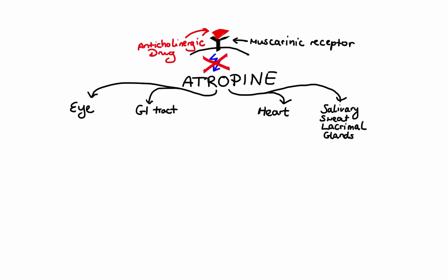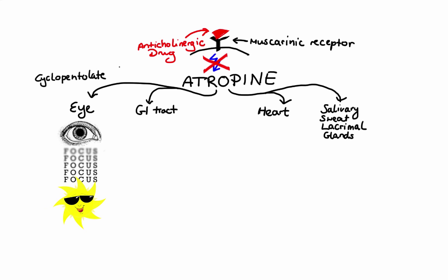Anti-muscarinic activity of atropine in the eye results in relaxation of the ciliary muscle, causing dilation of the pupil — also known as mydriasis — inability to focus visually, also known as cycloplegia, and unresponsiveness to light. Ophthalmic preparations of atropine are used before an eye exam or eye surgery, as well as to treat certain inflammatory conditions of the eye. However, because of its long duration of action, other anti-muscarinic agents such as cyclopentolate and tropicamide are preferred.